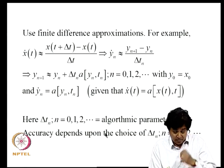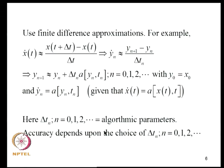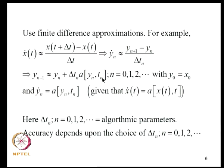Using a forward difference approximation, X dot is approximately equal to X(t plus delta T) minus X(t), divided by delta T. Consequently YN dot equals YN plus 1 minus YN divided by delta TN. From this, YN plus 1 equals YN plus delta TN times A(YN, TN), where N runs from 0, 1, 2, 3 with Y_naught equal to X_naught at T equal to T_naught.